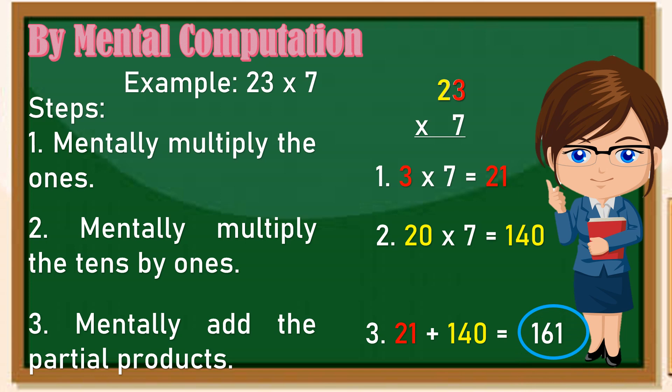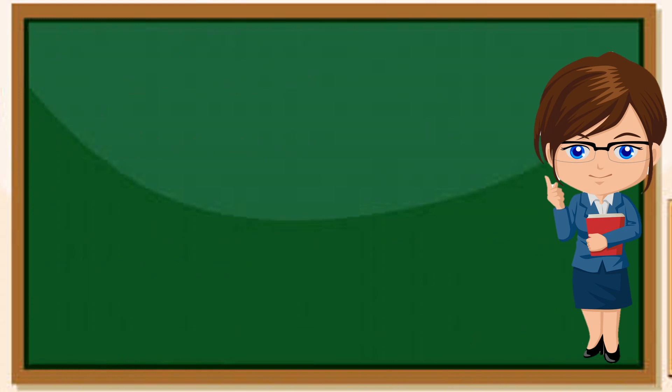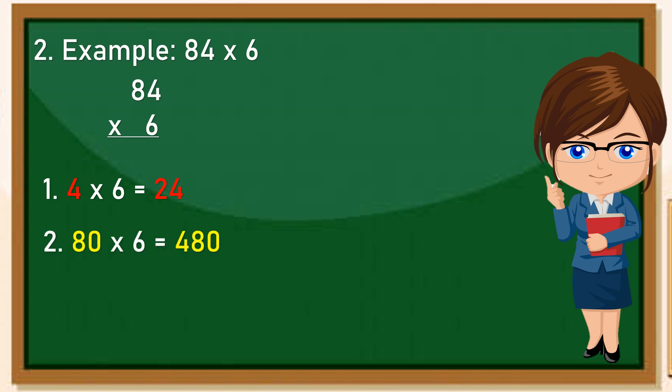Napakadali at napakasimple tama? Example number 2: 84 times 6. Isulat natin sya ng ganito and then sundin lamang ang steps. Step 1: multiply the ones. Ang ones ay ang 4, kaya 4 times 6 is 24. Then tens. Ang nasa tens ay 80, 8 ang value nya ay 80, kaya 80 times 6 is 480. Then add 24 plus 480 is 504.